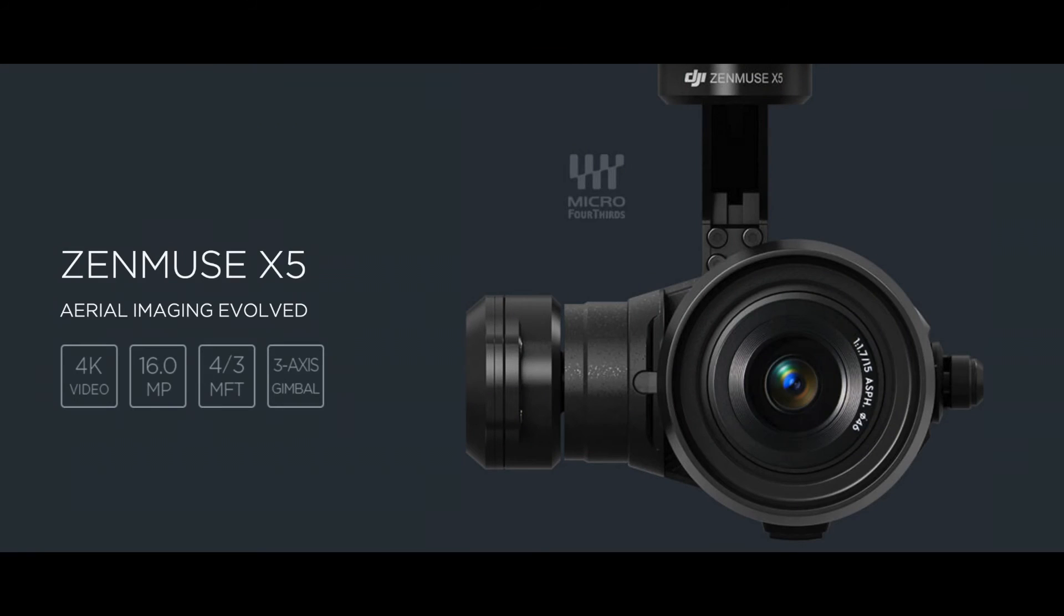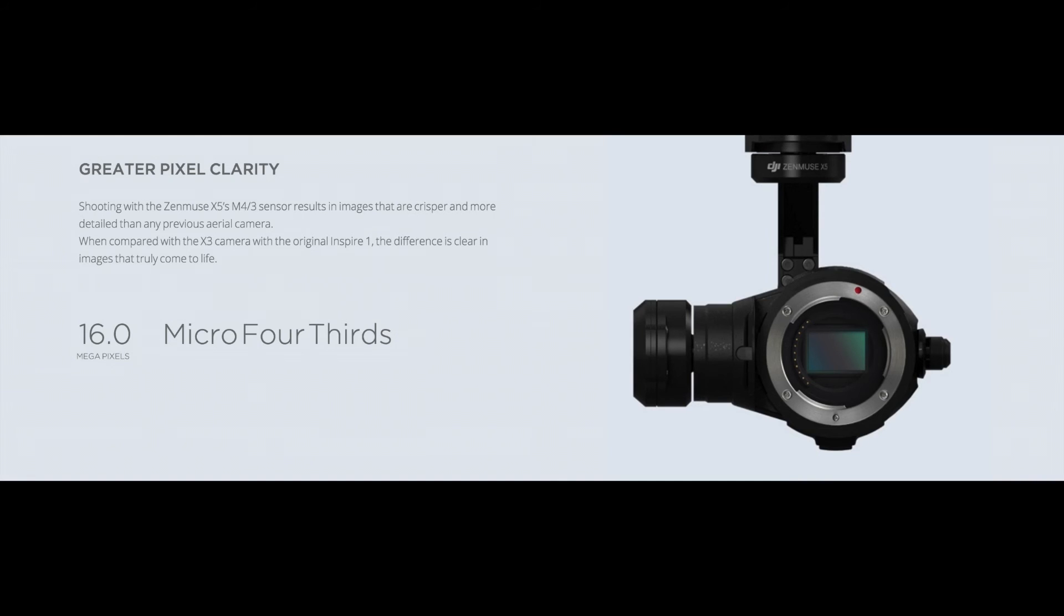The DJI Inspire 1 Pro now has a micro four-thirds camera with interchangeable lenses. This kit costs around $5,000 US dollars, and that's still substantially cheaper than a custom platform built to carry an equivalent camera or a more professional camera.